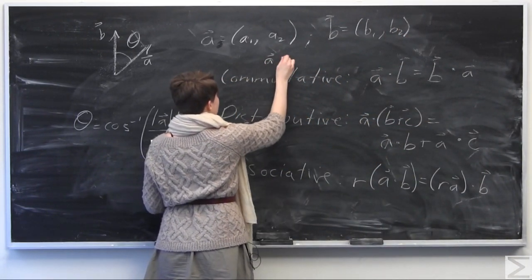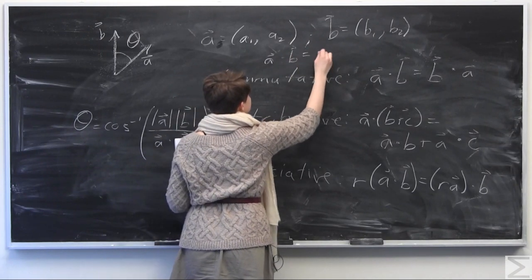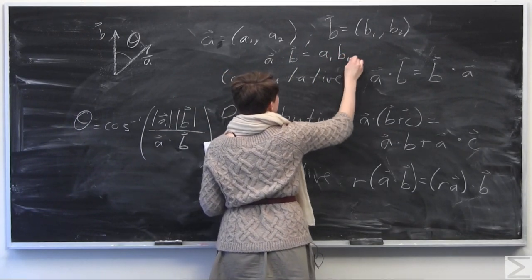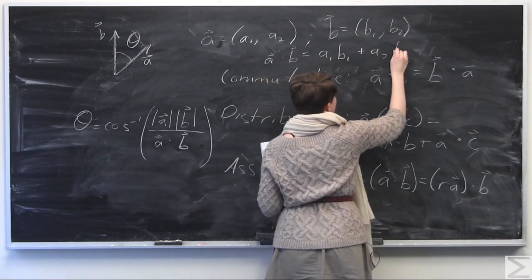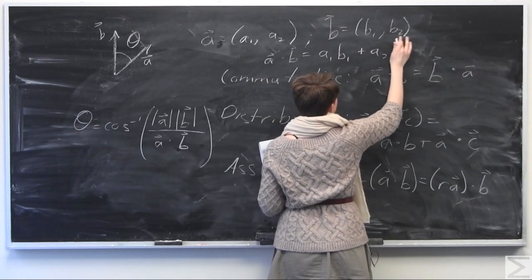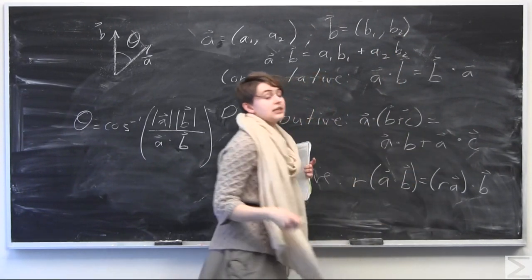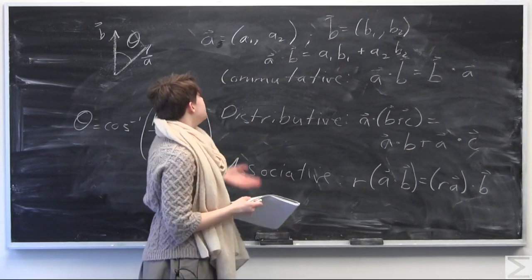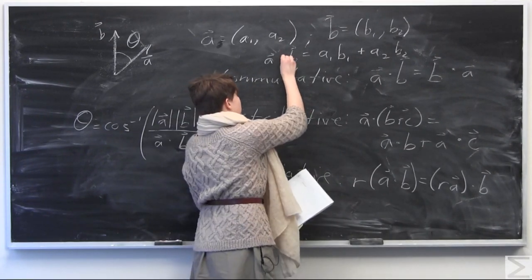Their dot product, A dot B, is going to be A1 B1 plus A2 B2. And you can apply this to any number of components as long as, again, the number of components are equal. So this is the definition of the dot product here.